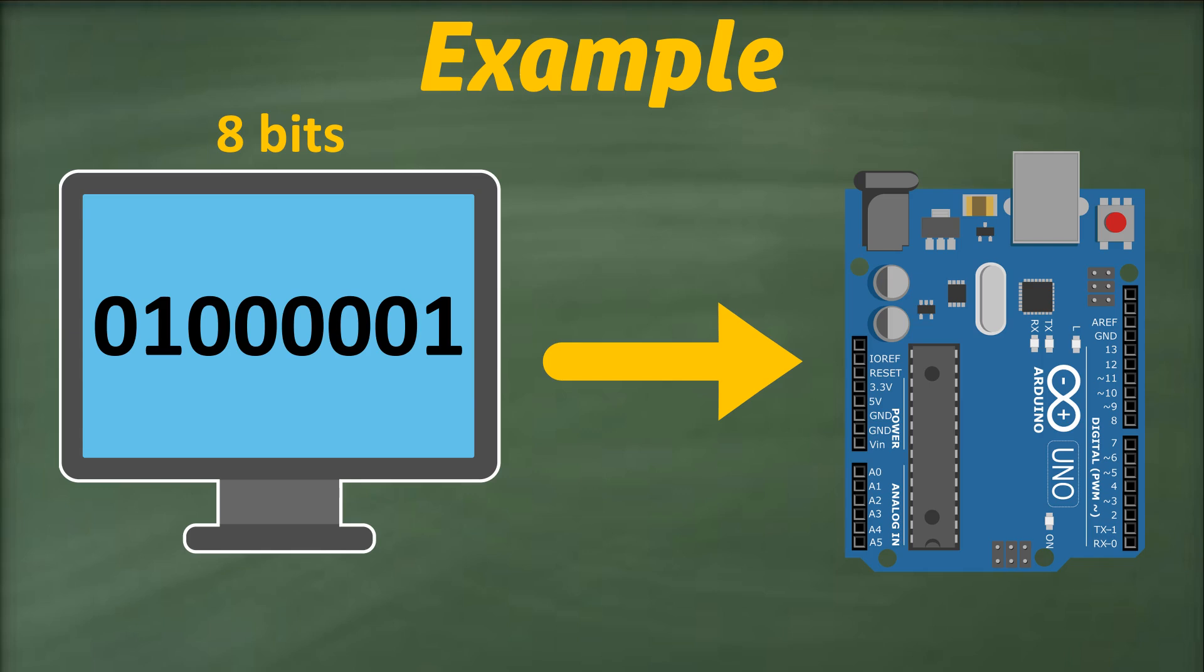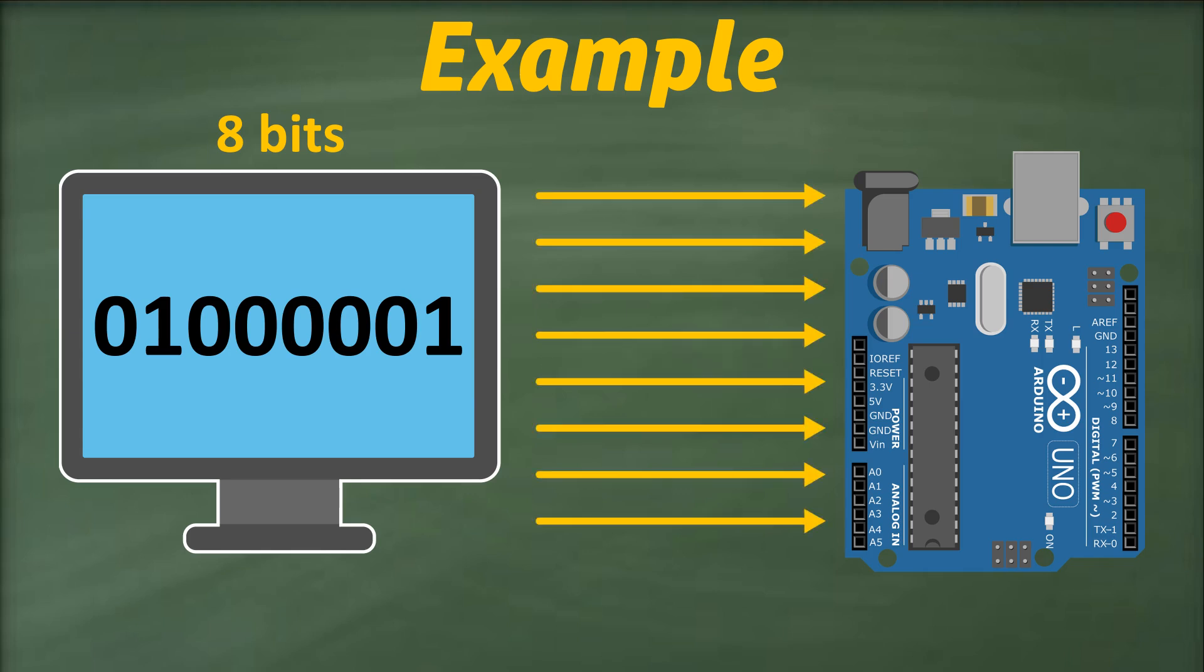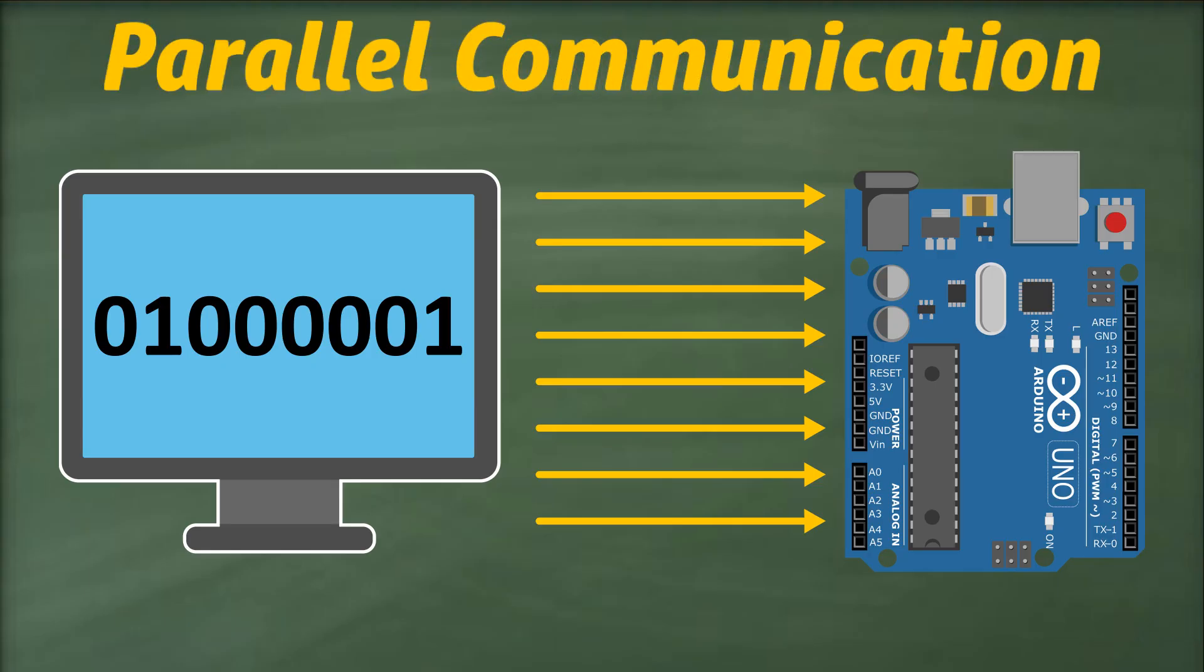One way of doing this is to use eight wires, one wire to carry one bit. A high signal represents a one, and a low signal represents a zero, and all the bits will be transmitted to our Arduino simultaneously at the same time. This method of communication between the PC and the Arduino is known as parallel communication.